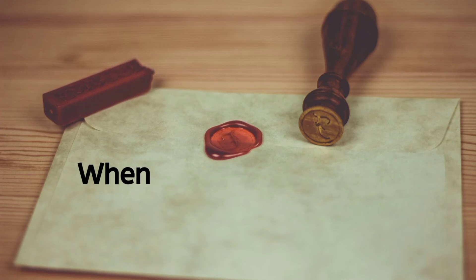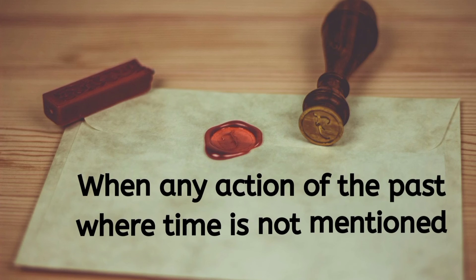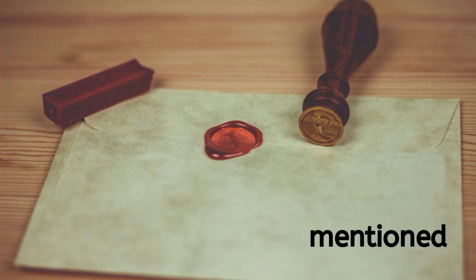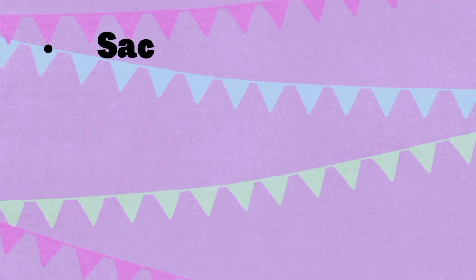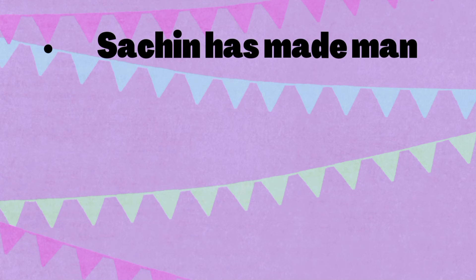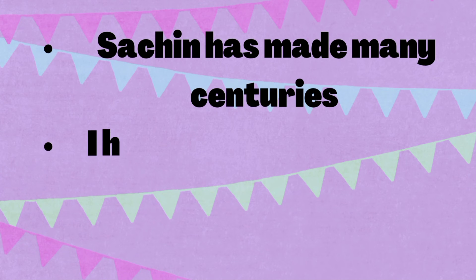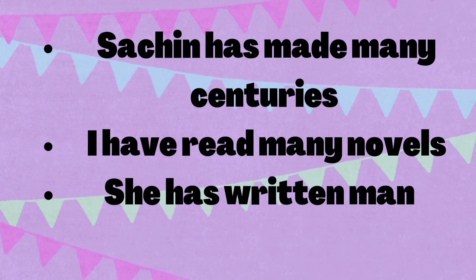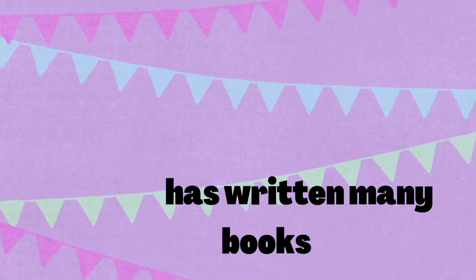The fourth use of has and have is when any action happened in the past where time is not mentioned. For example: 'Sachin has made many centuries.' 'I have read many novels.' 'She has written many books.' No time is mentioned in any of these.